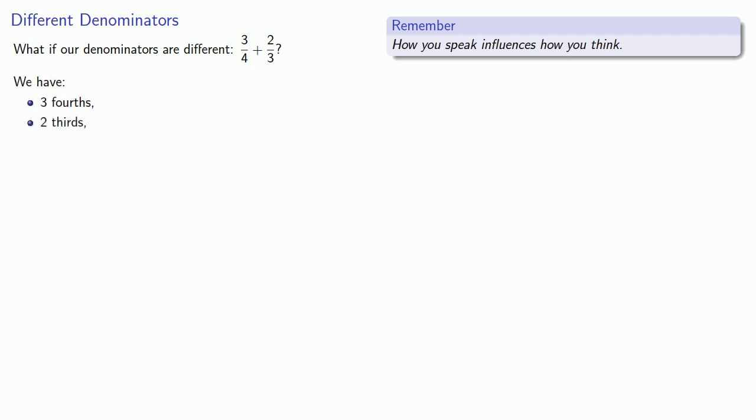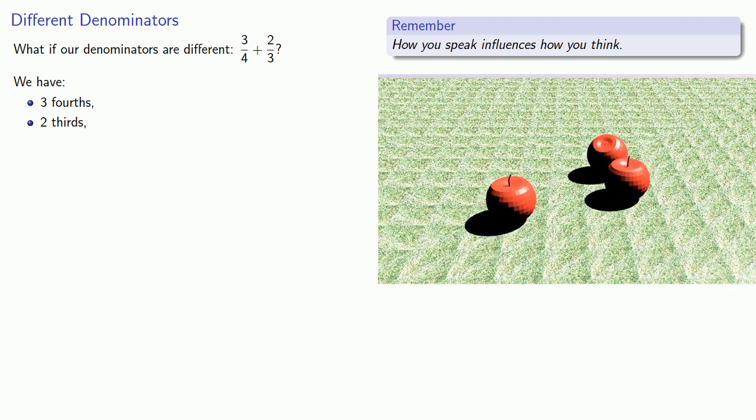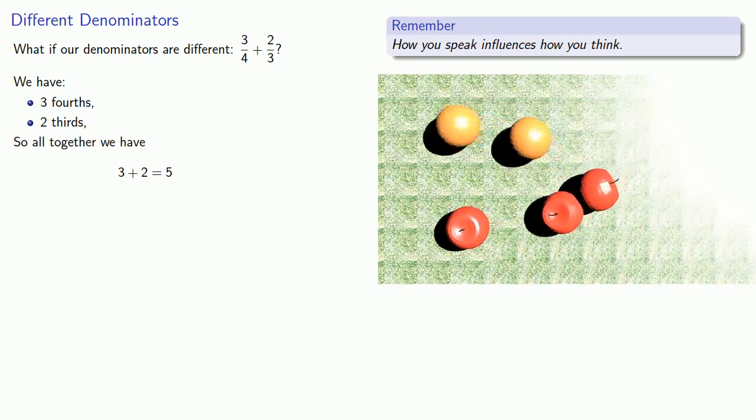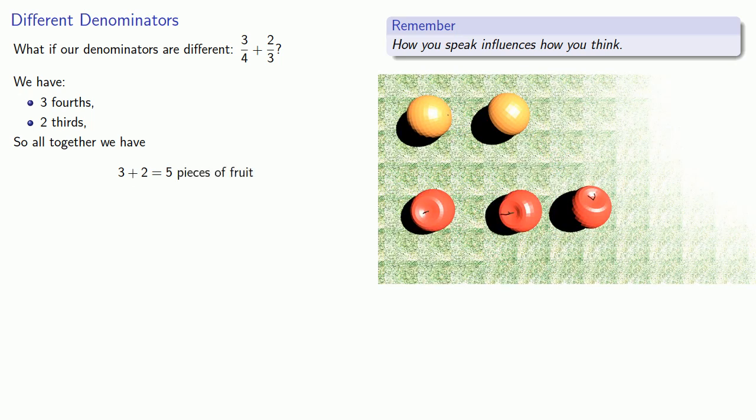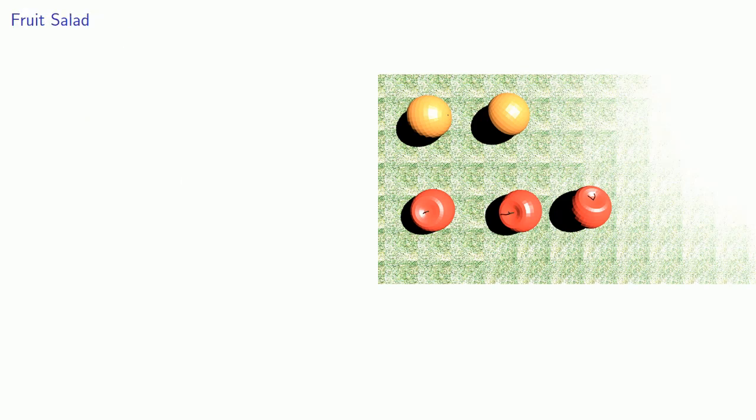What happens if our denominators are different? Again, how you speak influences how you think. We have 3 fourths and 2 thirds. If you read them this way, that reminds you that we have 3 of one type of thing and 2 of a different type of thing. So all together, we do have 3 plus 2 equals 5 things. But they're not apples. They're not oranges. They're pieces of fruit, which is something different entirely. So remember, since the fourths and thirds are different, we can't combine them meaningfully. Now we can't meaningfully add two things together if they're of different types. However, we can transform fractions into equivalent fractions.